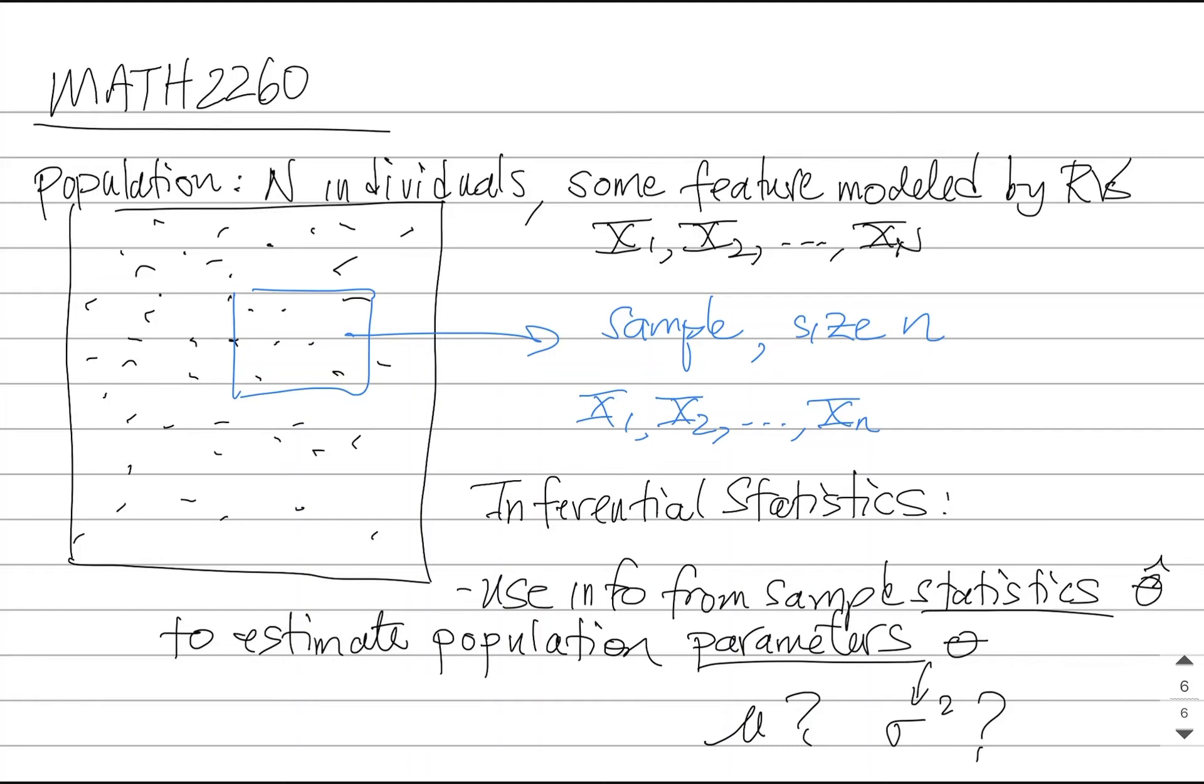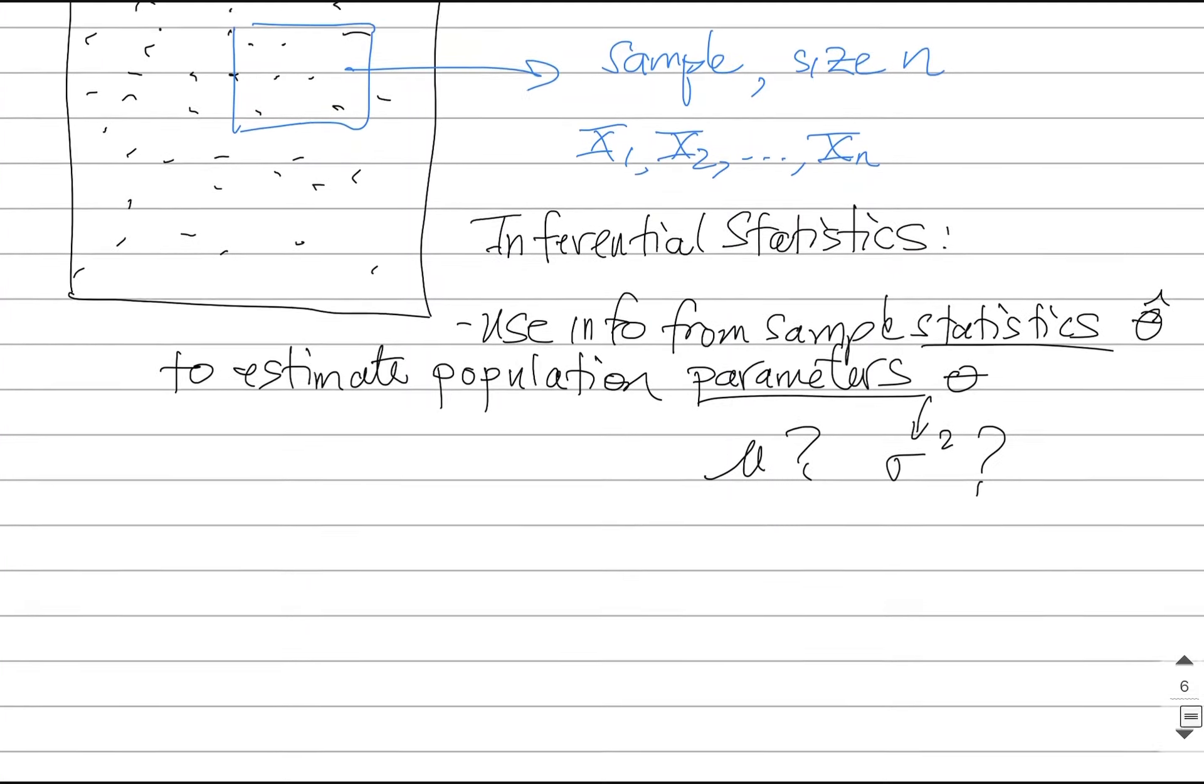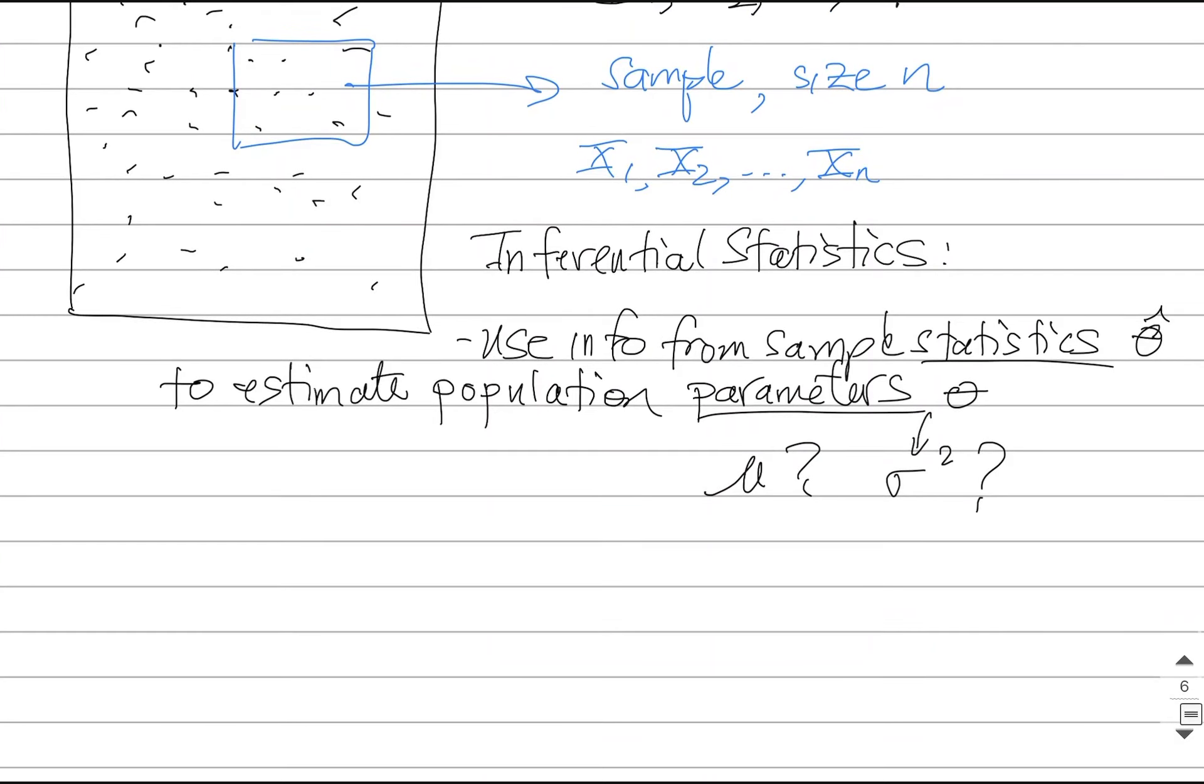So in particular when we take a sample we take the measurements we've got, the random variables, and form what's called a statistic. So a statistic is just some mathematical function of the random variables that we've got and we use the values, the observed values of that statistic to make a guess or an estimate about the population parameters.